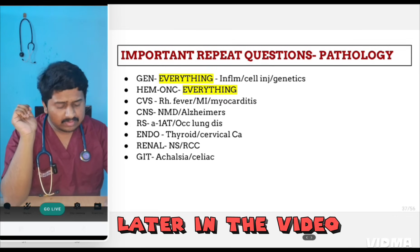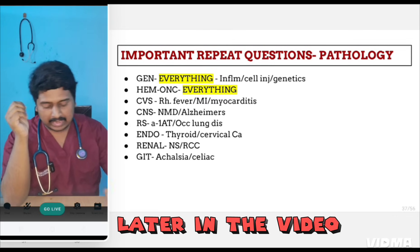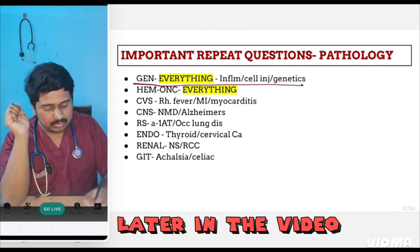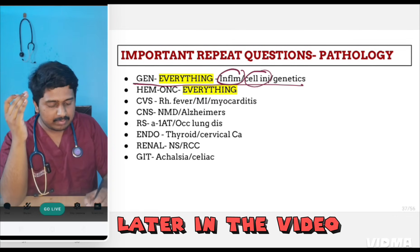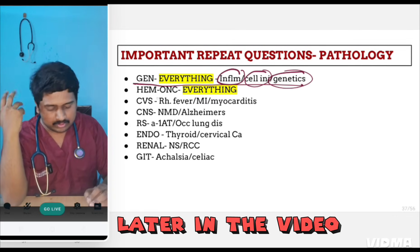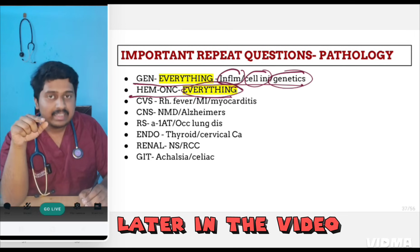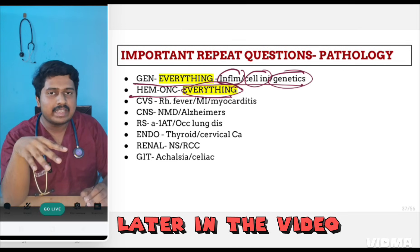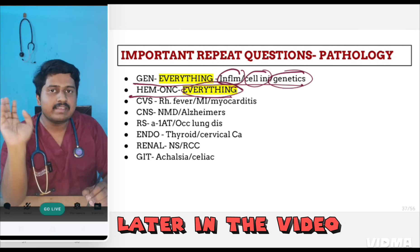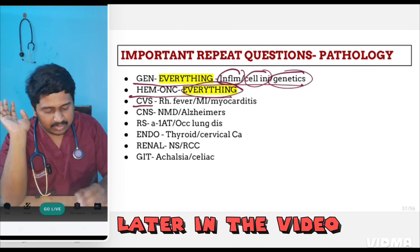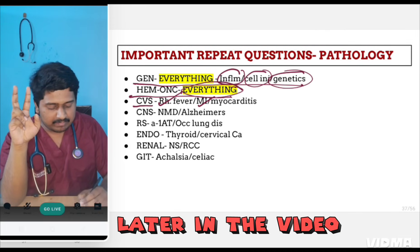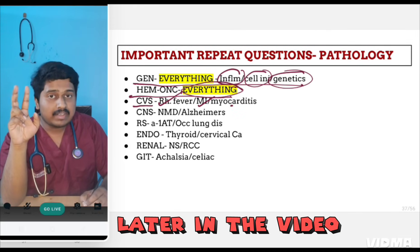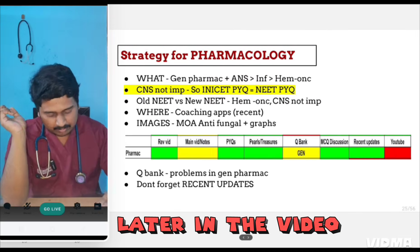Which are the repeat questions asked? In general pathology, study everything, but out of that, inflammation, cell injury, and genetics — these three chapters have the maximum number of questions asked. For hemato-oncology, study everything again. CVS: three topics have been repeated — rheumatic fever, myocardial infarction and its changes, and myocarditis.